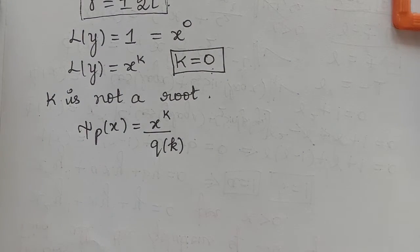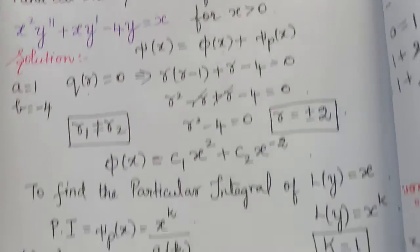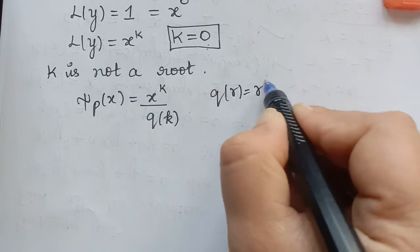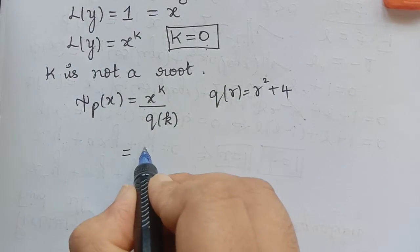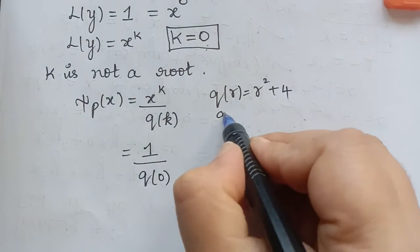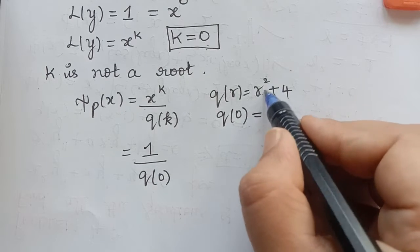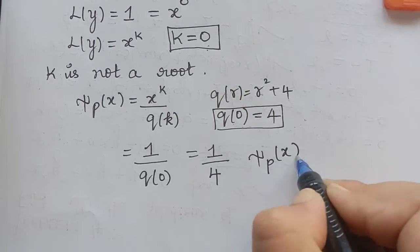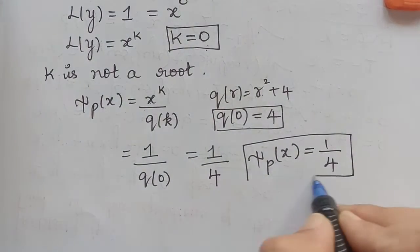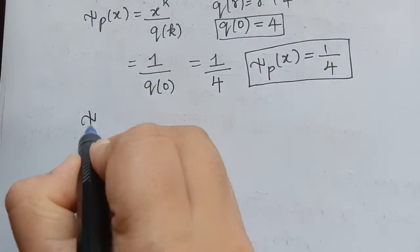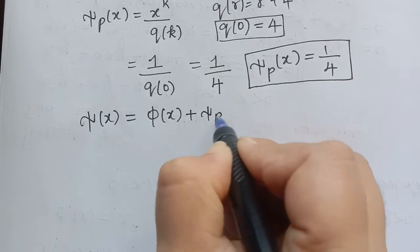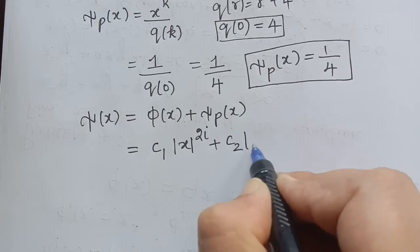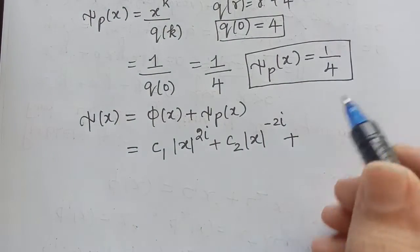Here q(r) = r squared plus 4. We compute q(0) = 0 squared plus 4 = 4. Therefore ξₚ(x) = x to the power 0 divided by q(0) = 1 divided by 4 = 1/4. The general solution ξ(x) = φ(x) + ξₚ(x) = c₁ |x| to the power 2i plus c₂ |x| to the power negative 2i plus 1/4, for |x| greater than 0 and c₁, c₂ constants.